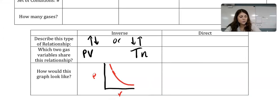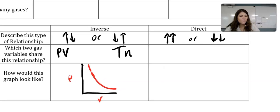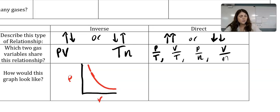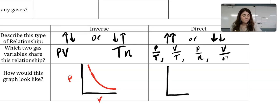For direct relationships, if one goes up, the other goes up, or if one goes down, the other goes down. We have four types of direct relationships: pressure and temperature, volume and temperature, pressure and moles, and volume and moles. For example, increasing temperature increases pressure. A graph of a direct relationship, such as volume and moles, will look like a linear line.